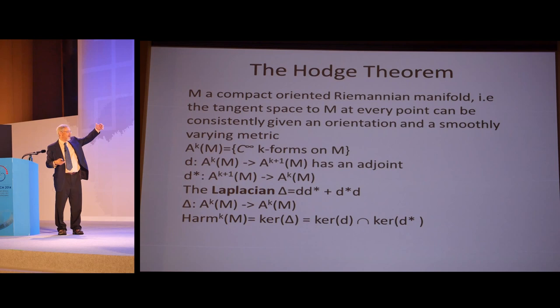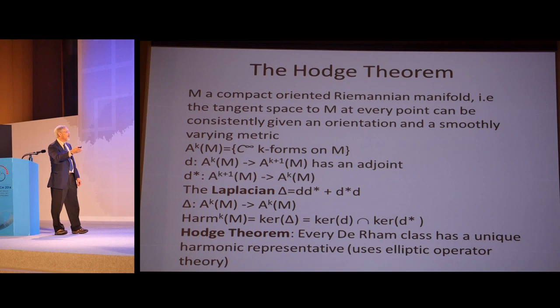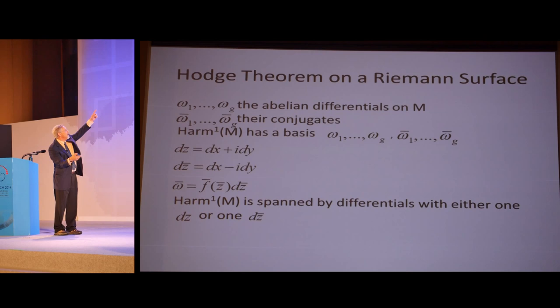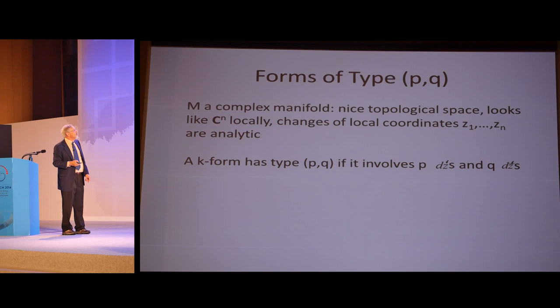These are in some sense the shortest k-forms in each de Rham class. Hodge was inspired to do this by Maxwell's equation. In relativity, electromagnetism is given by a two form, and d omega equals zero and d* omega equals zero are Maxwell's equations in free space. The Hodge theorem is that every de Rham class has a unique harmonic representative, and this uses elliptic operator theory. On a Riemann surface to go back, the abelian differentials and their conjugates are harmonic, and that's it. That's a basis for the harmonic forms. We're going to introduce dz, which is a complex valued one form. It's dx plus i dy locally. dz bar is dx minus i dy locally. So these omega bars look like f bar of z bar of dz bar. The point here is that the harmonic one forms are spanned by differentials with either one dz or one dz bar.